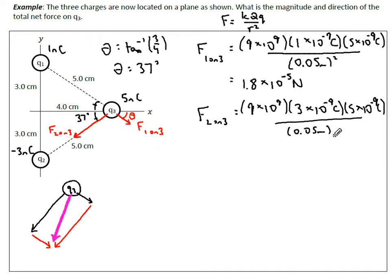We get a value that's going to be just 3 times bigger because the only thing that's different in these two equations is the charge is 3 times larger. So 1.8 times 3 is 5.4 times 10 to the negative 5.